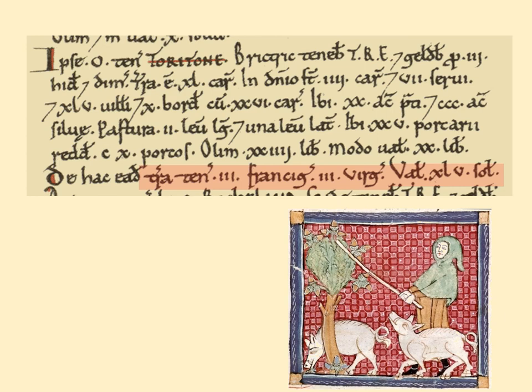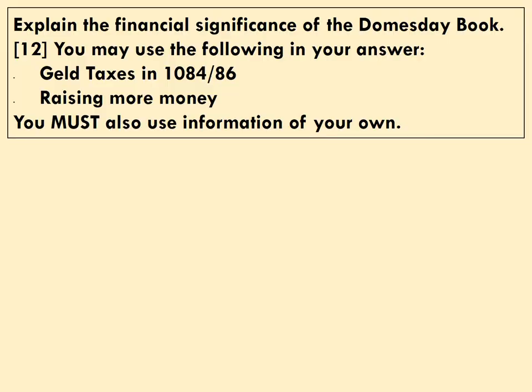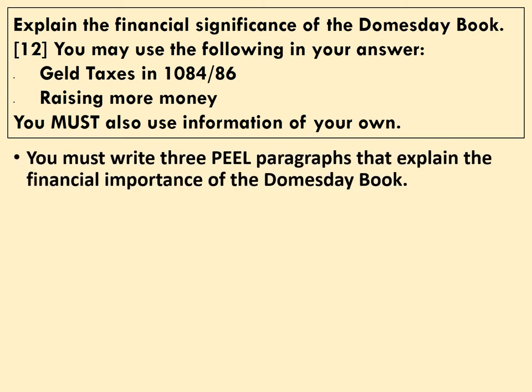What was its significance to William? We can explore that through this exam question, which asks us to explain the financial significance of the Domesday Book — though this could be changed for the military or legal significance. You may use the following in your answer: geld taxes of 1084 and 1086, and raising more money. You must also use information of your own, so beyond those two given examples, you'll need to include a third of your own. Write a minimum of three PEEL paragraphs — Point, Example, Explain, and Link — explaining the financial importance of the Domesday Book.